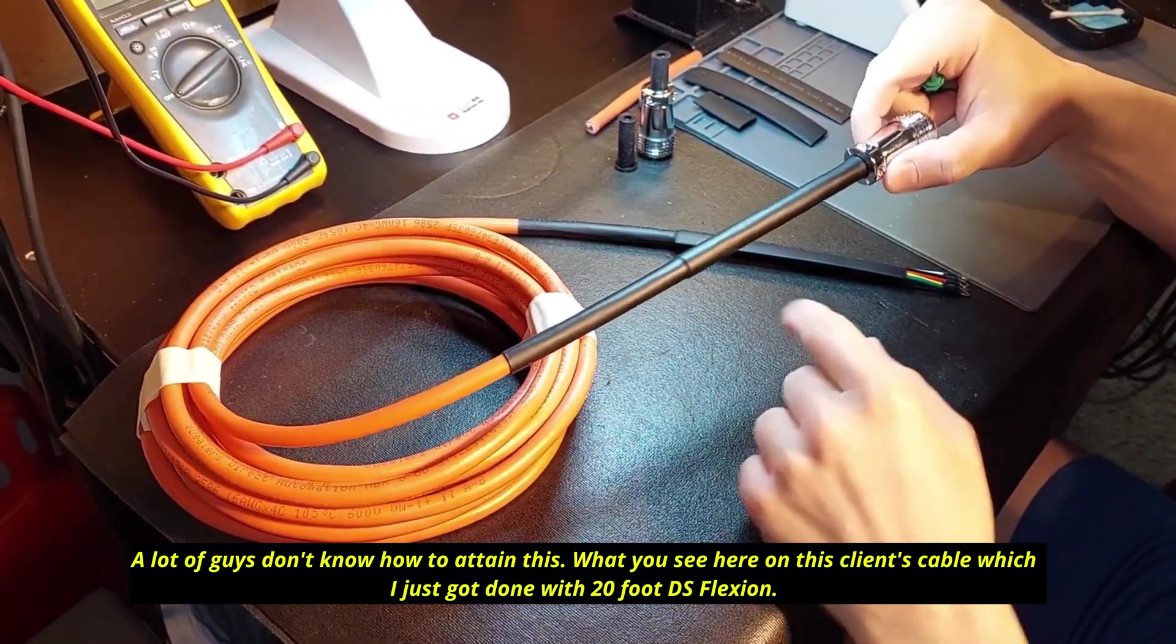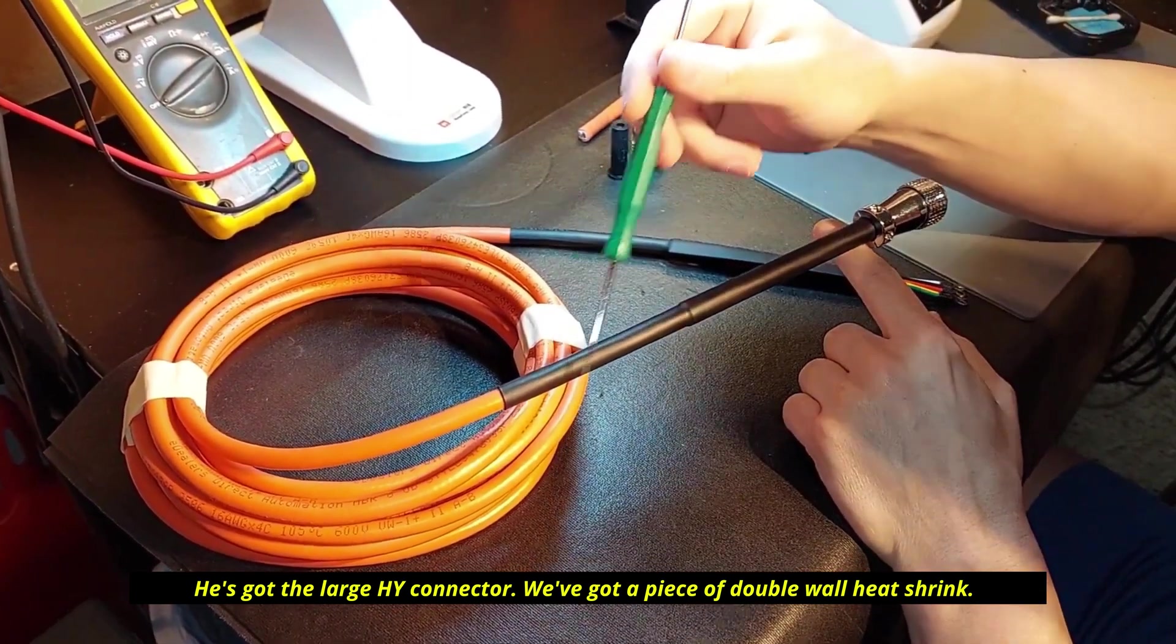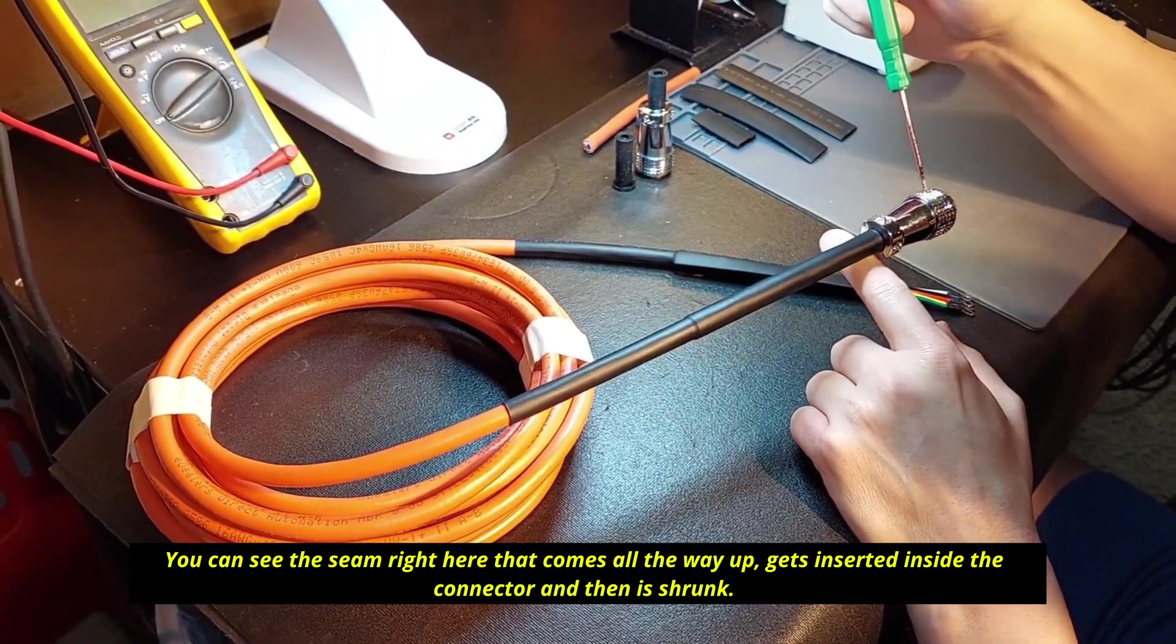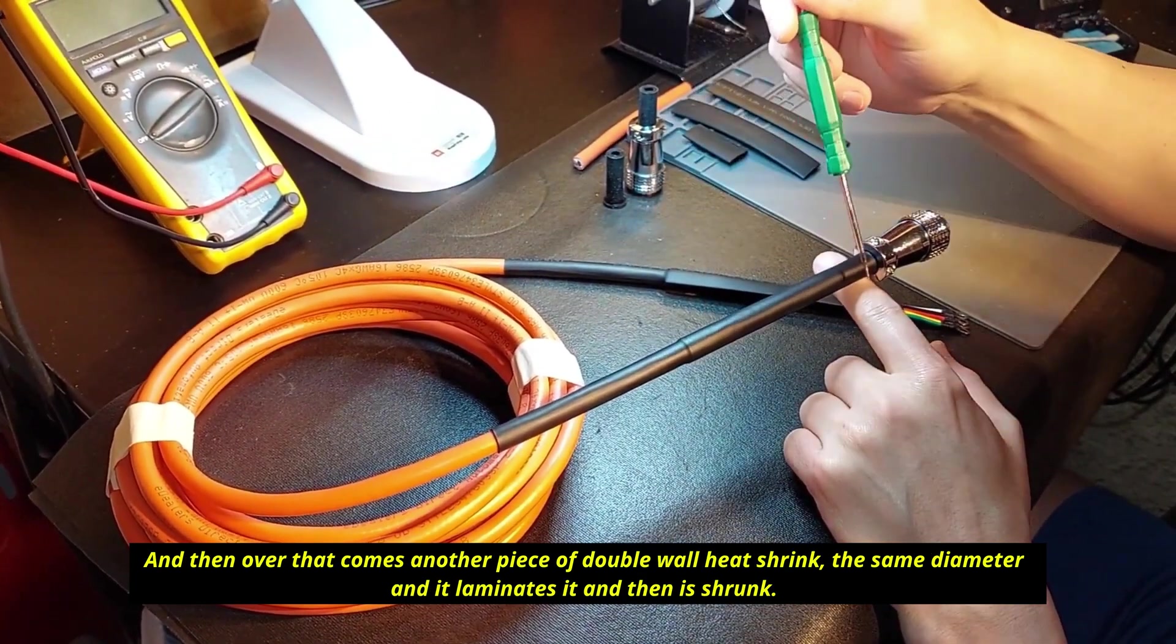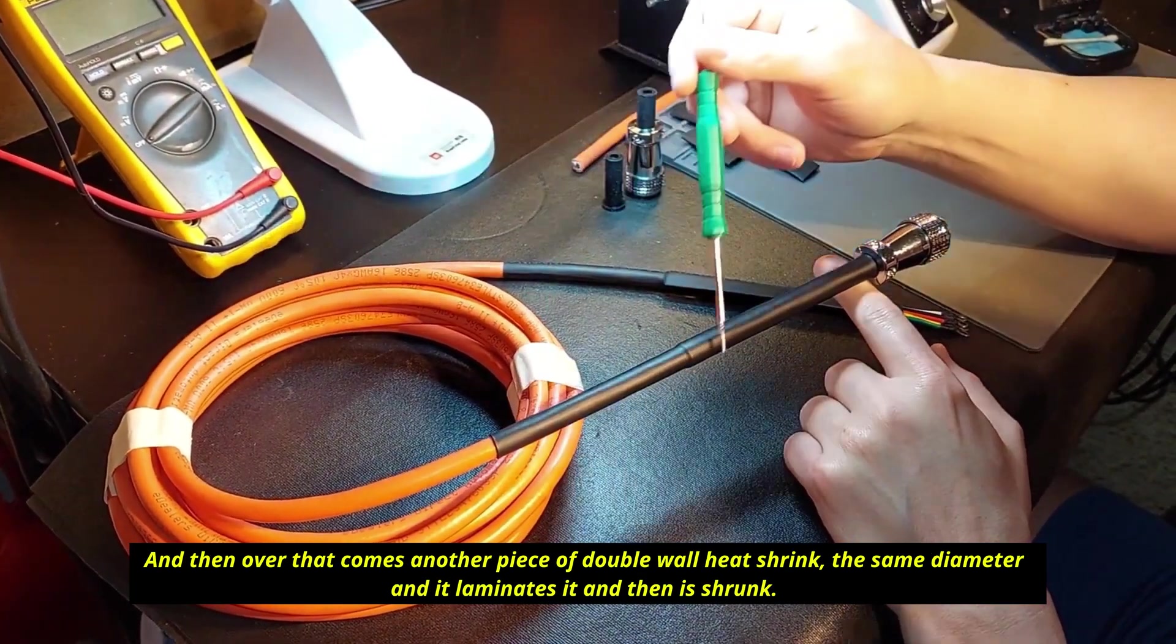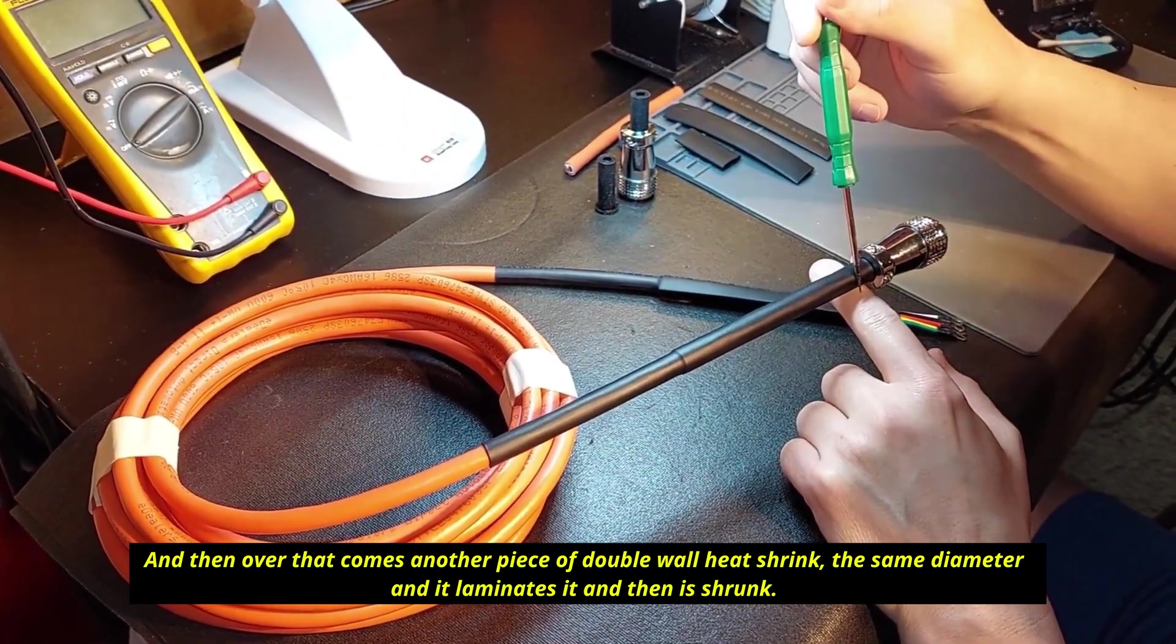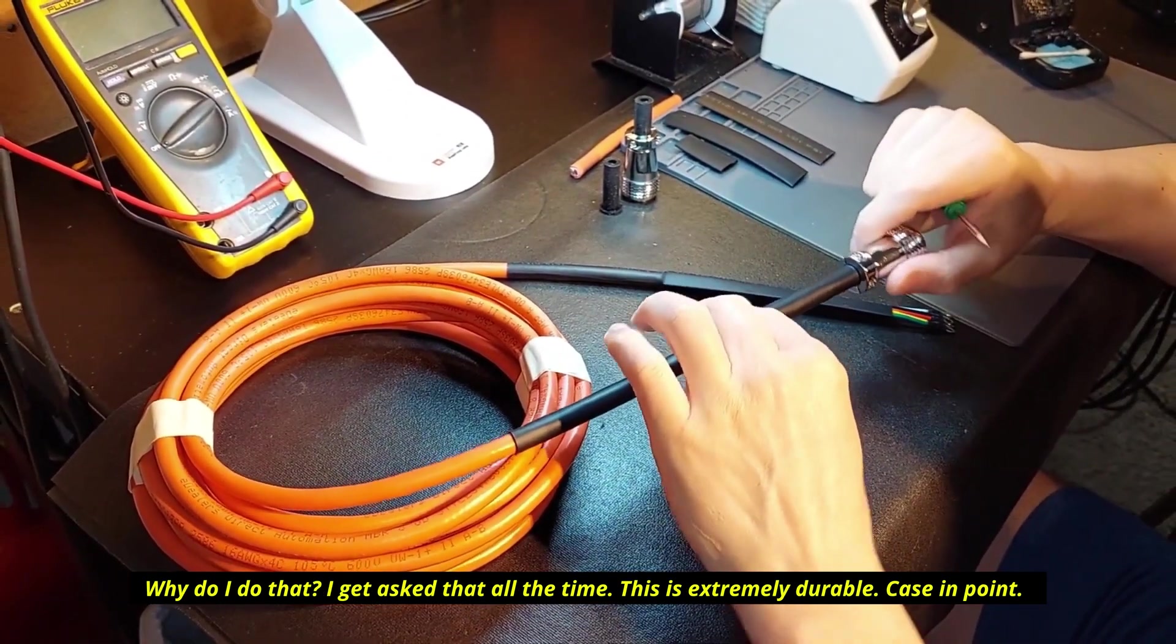What you see here on this client's cable which I just got done with - 20 foot DS flexion, he's got the large HY connector - we've got a piece of double wall heat shrink. You can see the seam right here that comes all the way up, gets inserted inside the connector and then is shrunk. Then over that comes another piece of double wall heat shrink the same diameter, and it laminates it and then is shrunk. Why do I do that? I get asked that all the time. This is extremely durable.